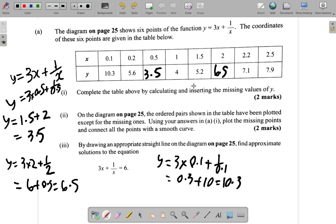And you notice this 1, 4 here. When x is 1, y is 3 times 1 plus 1 over 1. 3 times 1 is 3, plus 1 over 1 is 1. 3 plus 1 is 4. Alright? Okay. So that's the completed table.